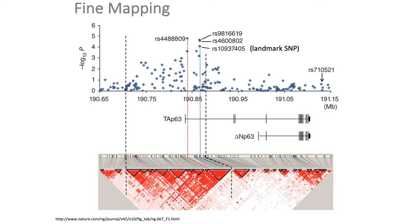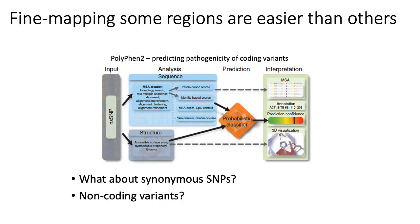Just like a Hi-C map, you see blocks on the diagonal, and those blocks tend to correlate well with haplotypes. A block of SNPs that are highly correlated across the population and therefore likely to be co-inherited will tend to form a red block. You can basically visualize the problem of fine mapping here: even though your GWAS study identified this landmark SNP as correlated with your phenotype, there's a whole bunch of other SNPs that are highly correlated with it, so in practice you can't really know which one is the real one.